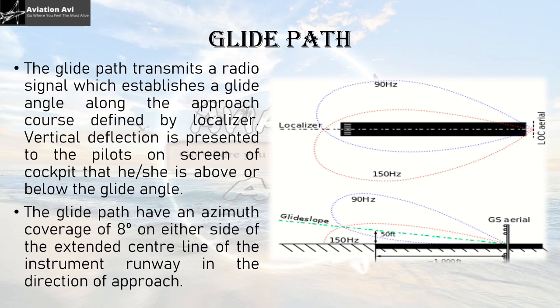The second equipment is the glide path. The glide path transmits a radio signal which establishes a glide angle along the approach course defined by the localizer. Vertical deflection is presented to the pilots on the cockpit screen indicating whether they are above or below the glide angle. The glide path has an azimuth coverage of 8 degrees on either side of the extended runway center line. Localizer frequencies are arranged horizontally on either side of the runway center line, while the glide path frequencies are arranged vertically.